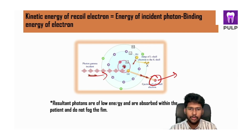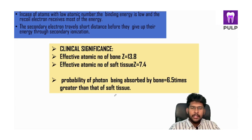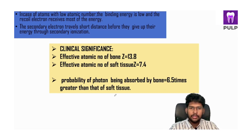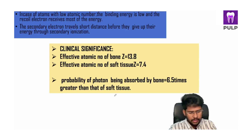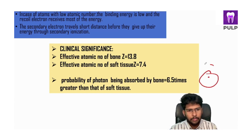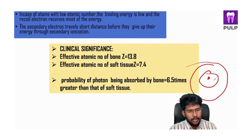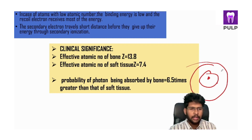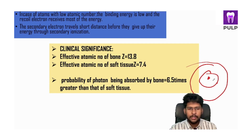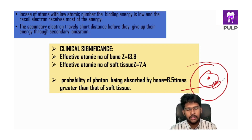The resultant photons are of low energy and are absorbed within the patient without fogging the film. In case of atoms with low atomic number, the binding energy is low and the recoil electron receives most of the energy. In case of low atomic number, the energy required to remove the electron is less, so most of the energy goes into the new x-ray formed, helping to fog the film. Whereas if the atomic number is high, most of the energy is consumed to remove the electron from the orbit, creating a low energy x-ray after the interaction which does not fog the film.